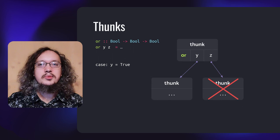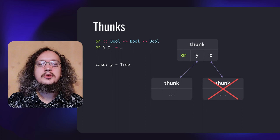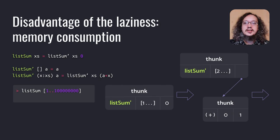This approach to computations looks very attractive. It doesn't waste our CPU power for nothing, and it makes it possible to easily use infinite structures. So, why is the most popular computational order still strict? One of the main disadvantages is memory consumption. First, a THUNK usually has a larger size than an already computed value. Second, sometimes reducing a computation could create, temporarily, a huge number of THUNKs. Even very simple functions could lead to eating all the available memory.